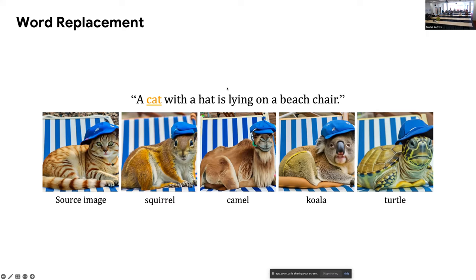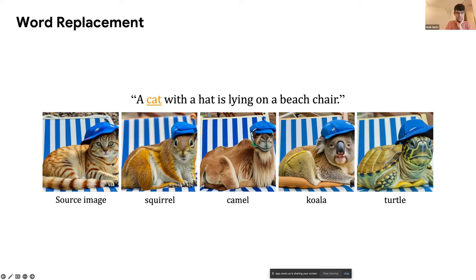Question from Zoom: This looks really great. I'm wondering about the attention maps you're demonstrating — at what layer are you looking, or are you averaging over certain layers? Answer: In this visualization, we show an average of all the layers, all the layers and all the heads, and just upsample them to the same resolution.